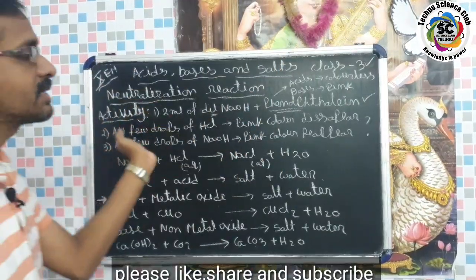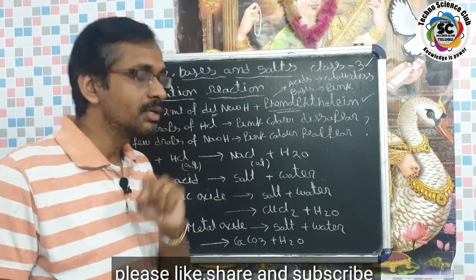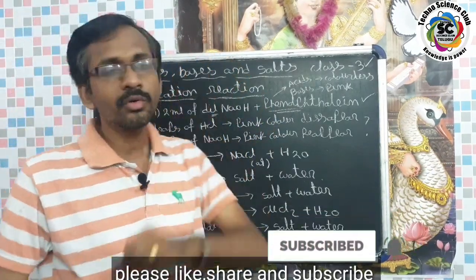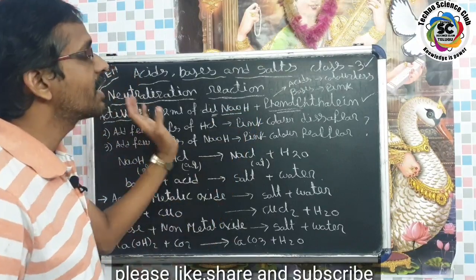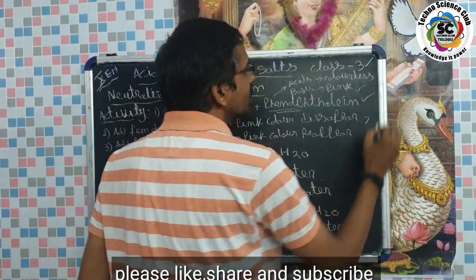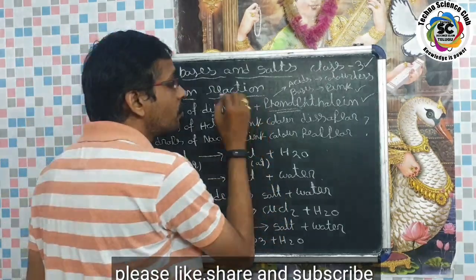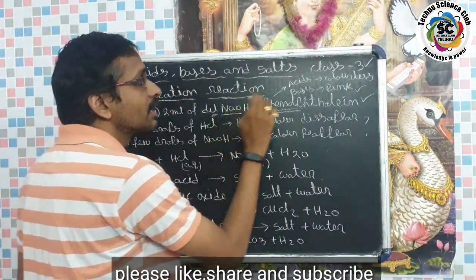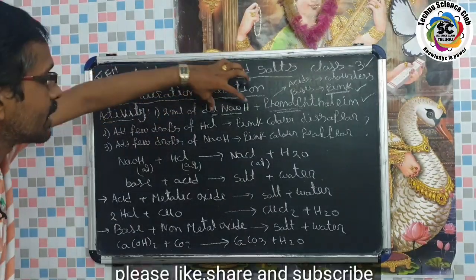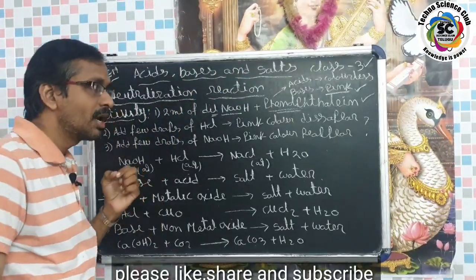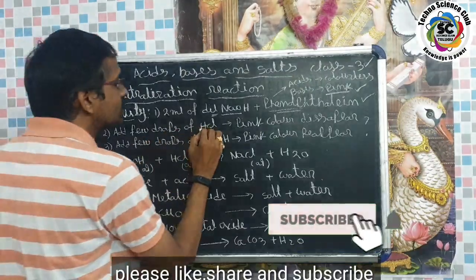Phenolphthalein solution is used to distinguish acids from bases. NaOH is a base, so when phenolphthalein is added to a base, the solution turns pink. If we add phenolphthalein to an acid, there is no color — it remains colorless. But if we add phenolphthalein to a base, it turns pink. So with 2 ml of dilute NaOH, add some phenolphthalein and it turns pink. After that, add a few drops of HCl.